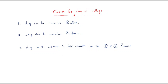When discussing the EMF equation, we have some voltage drops. The title itself covers the causes for the drop of voltage. The first cause is the drop due to armature reaction. The armature flux affects the main field flux, and due to the armature flux some EMF is dropped — this is known as the armature reaction.